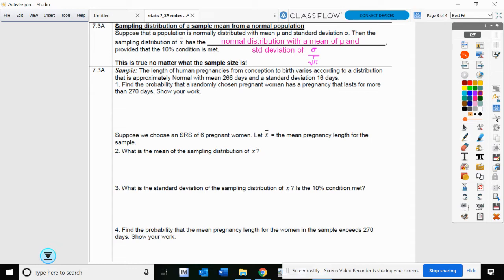The length of human pregnancies from conception to birth varies according to a distribution that is approximately normal with a mean of 266 days and a standard deviation of 16 days. Find the probability that a randomly chosen person has a pregnancy that lasts more than 270 days. So the first thing we have to do is calculate a z-score. We're going to take our 270 value, subtract our mean and divide by our standard deviation. 270 minus 266 is 4 divided by 16 is one-fourth, so 0.25.